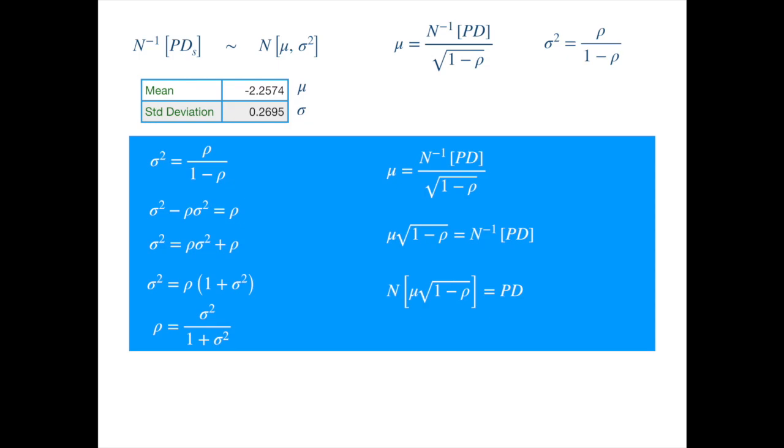Now let's plug in the values in the two formulae. Plugging in the standard deviation in the first formula we get the correlation. And plugging the mean and the correlation into the second formula we get the PD. And we have calibrated the Vasicek distribution.